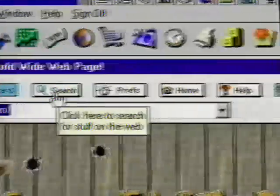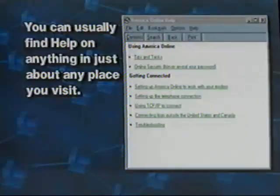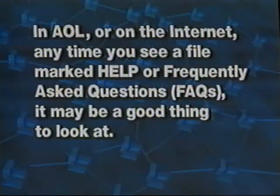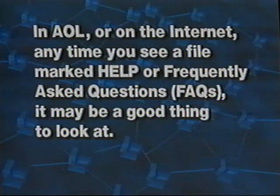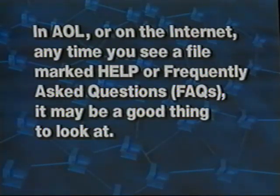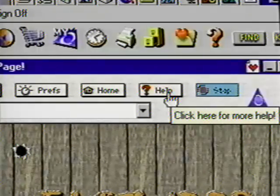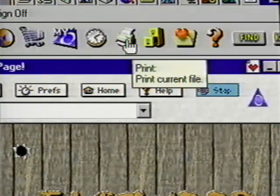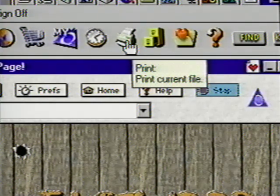Back to the options on our web page — we have a Search button that opens the same AOL Net Find page. You can find help on anything in just about any place you visit — anytime you see a file marked Help or FAQs, that's Frequently Asked Questions, and it may be a good thing to look at. Many people have the same problems using the internet, so someone has already asked the question you are thinking of. There's also a printer icon — just click this while in the site you'd like to print and you'll have a hard copy of that page.